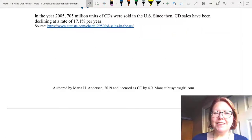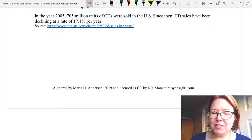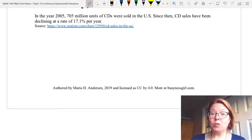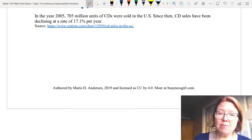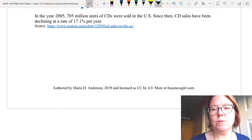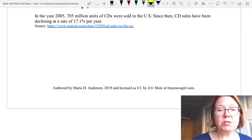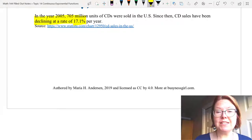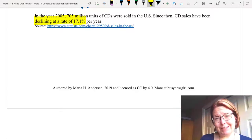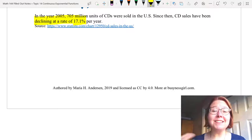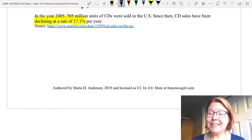Last scenario. In the year 2005, 705 million units of CDs were sold in the U.S. Since then, CD sales have been declining at a rate of 17.1% per year. What do we have in this problem? We do have a percent. So we know it's some kind of exponential. And we know it's a declining percent. And the word continuous was never mentioned in this problem. So if it's never mentioned, you have to assume that you're looking at a discrete model.